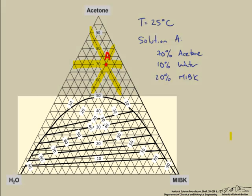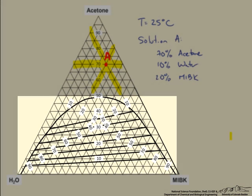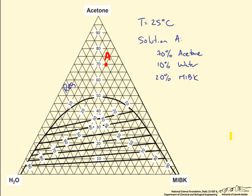As you can see, this is outside of the envelope region, which we'll call Region 1. When any solution falls in Region 1, it stays as a single phase liquid. The other possibility is if we fall under that envelope.